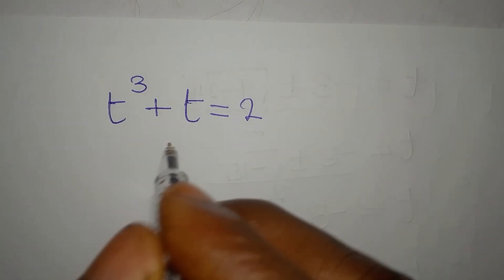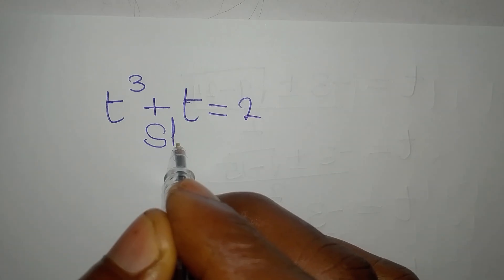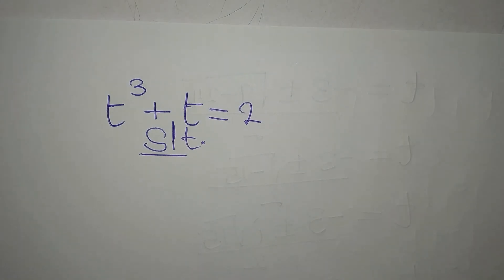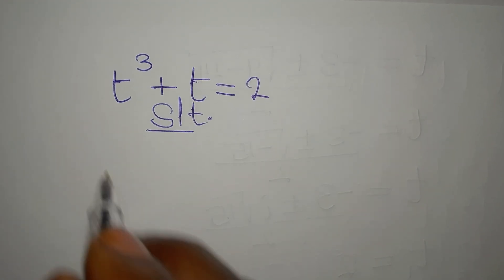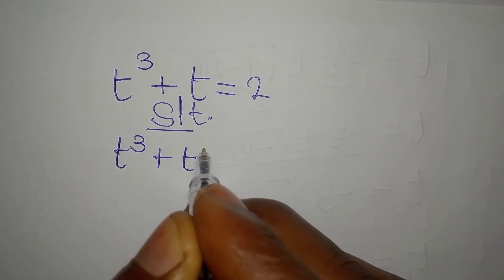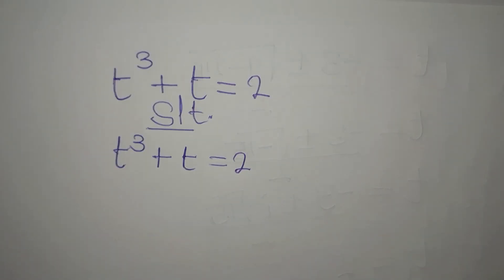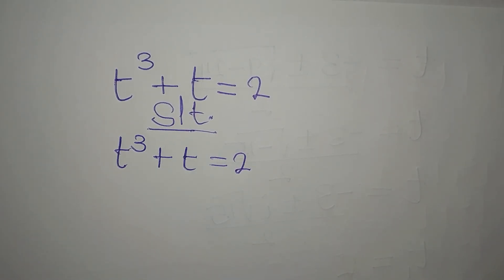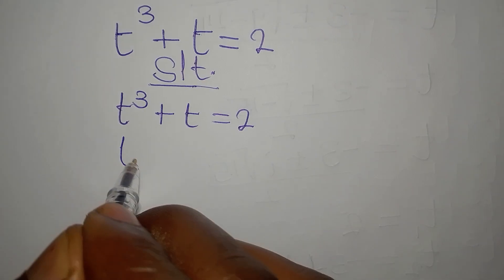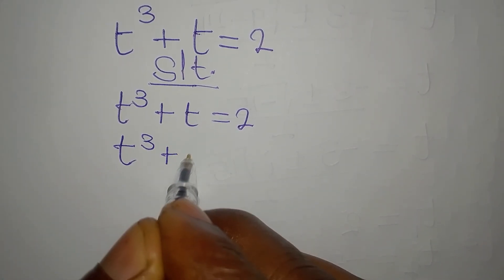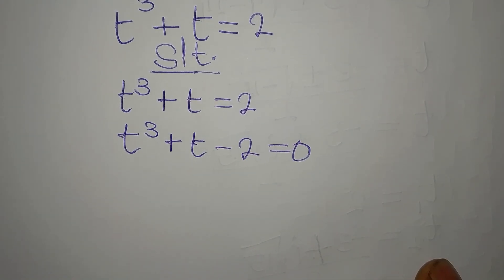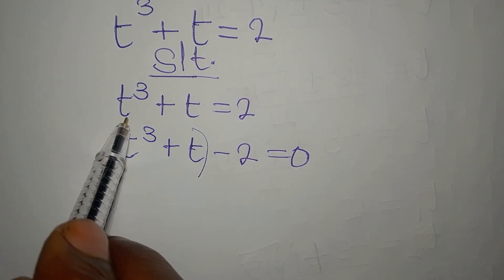Welcome to Foucault Mathematics. Let's solve this problem: we have t to the power of 3 plus t equals 2. Let's bring this to the left so that we have t cubed plus t minus 2 equals 0.